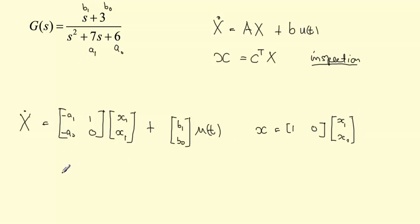So in this particular case of our problem what will happen is we're going to have here x dot which is actually x1 dot, x2 dot equals to - in this case our a0 is 6 minus 6 minus 7 and 1 and 0